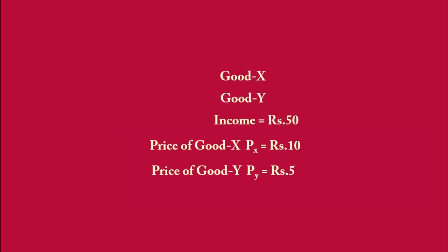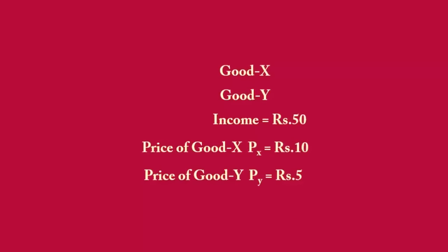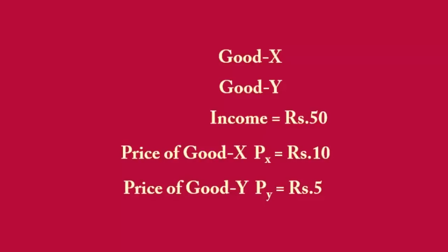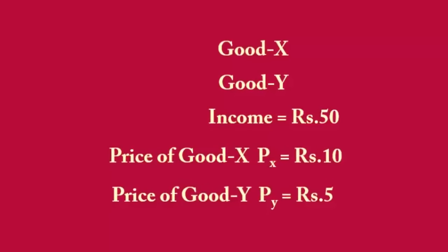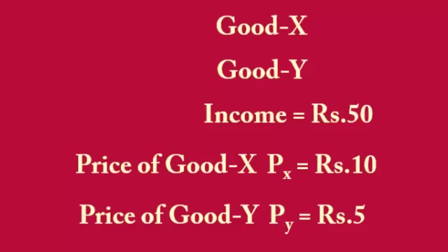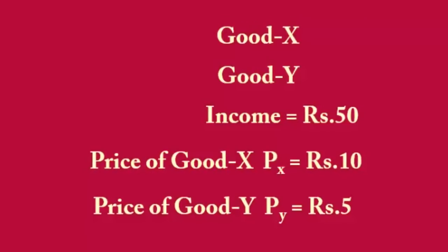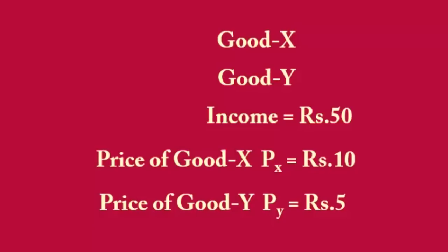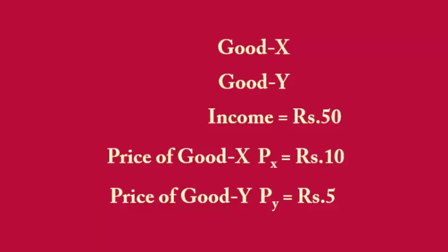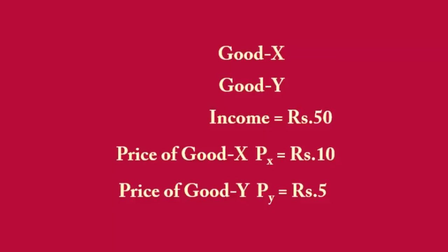Let us make our analysis simple by assuming the consumer is consuming two goods — Good X and Good Y. His income or money at his disposal is Rs.50. The price of Good X is Rs.10 and the price of Good Y is Rs.5. In the consumption of goods, the law of diminishing marginal utility operates.